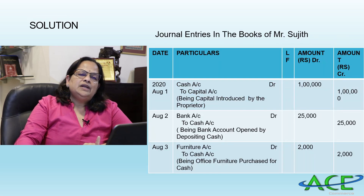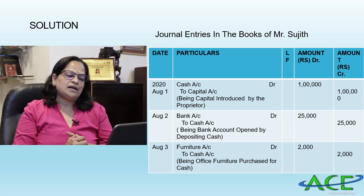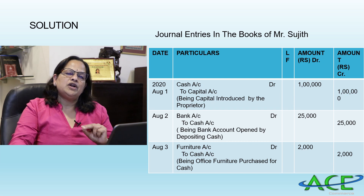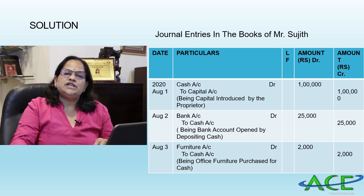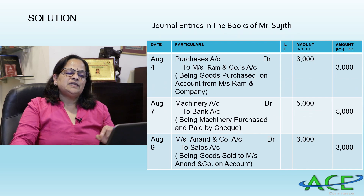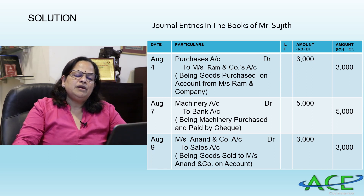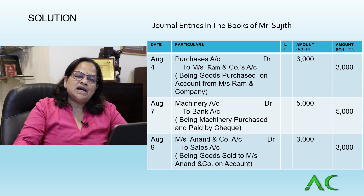Journal entries: August 1st — Cash Account Dr. to Capital Account ₹1,00,000, being capital introduced by Mr. Sujit the proprietor. August 2nd — Bank Account Dr. to Cash Account ₹25,000. August 3rd — Furniture Account Dr. to Cash Account ₹2,000, being office furniture purchased for cash. August 4th — Purchases Account Dr. to Messrs Ram and Company's Account ₹3,000, being goods purchased on credit. August 7th — Machinery Account Dr. to Bank Account ₹5,000, being machinery purchased and paid by cheque.